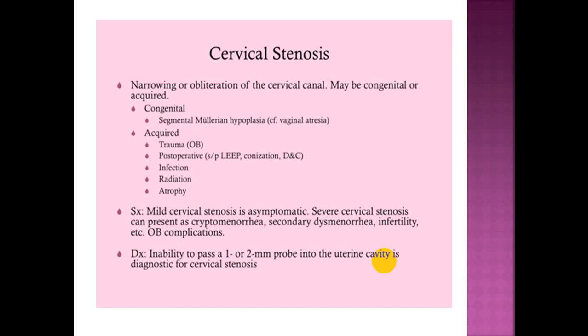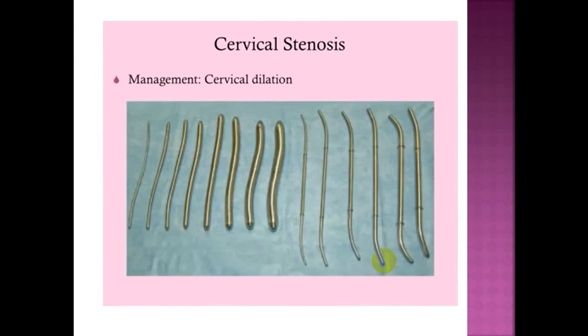Mild cervical stenosis is asymptomatic. Severe cervical stenosis can present as cryptomenorrhea, secondary dysmenorrhea, infertility, and postoperative obstetrical complications. Diagnosis: inability to pass a 1 or 2 mm probe into the uterine cavity is diagnostic for cervical stenosis.